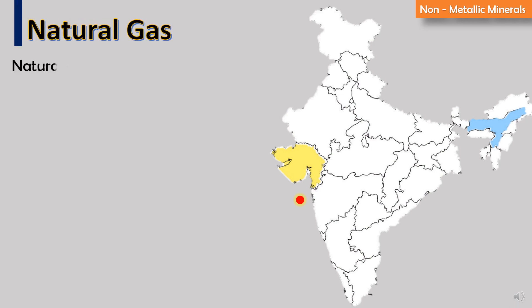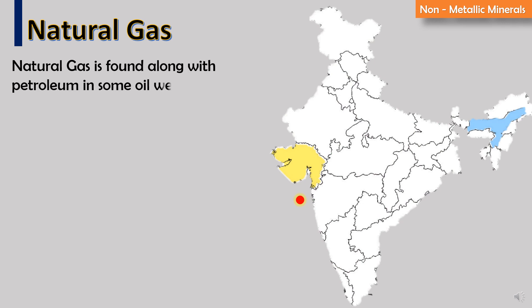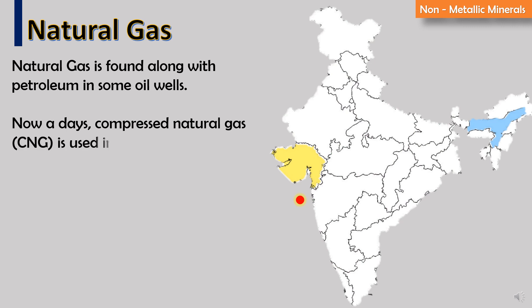Natural gas is found along with petroleum in some oil wells. Nowadays, compressed natural gas is used in vehicles. It is pollution free.